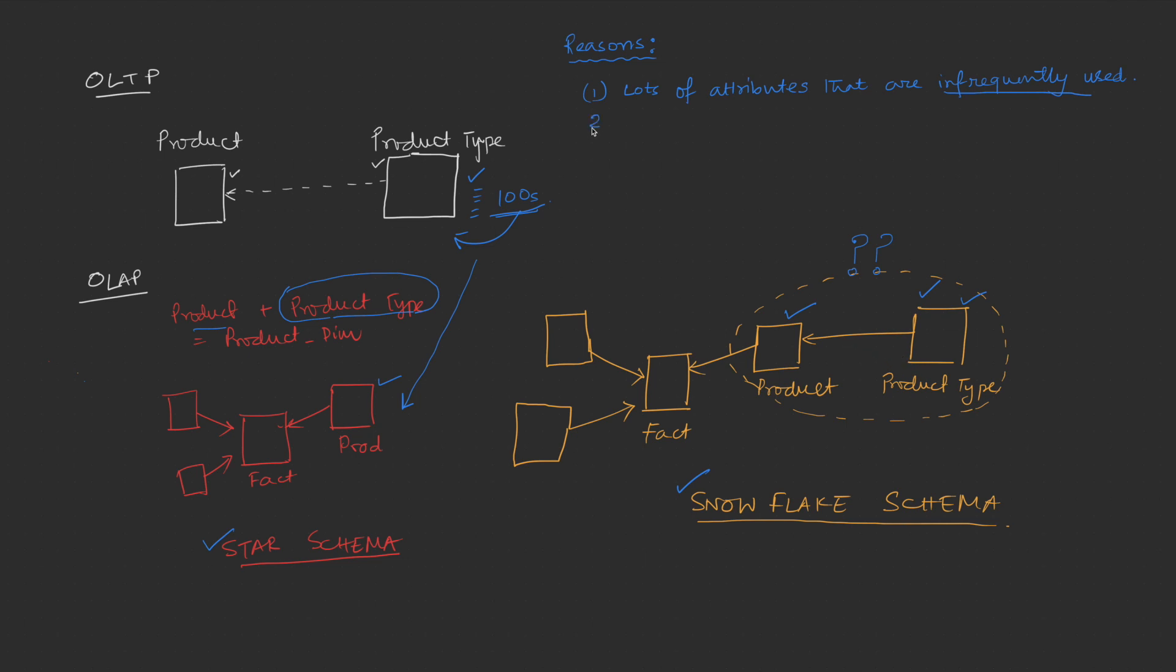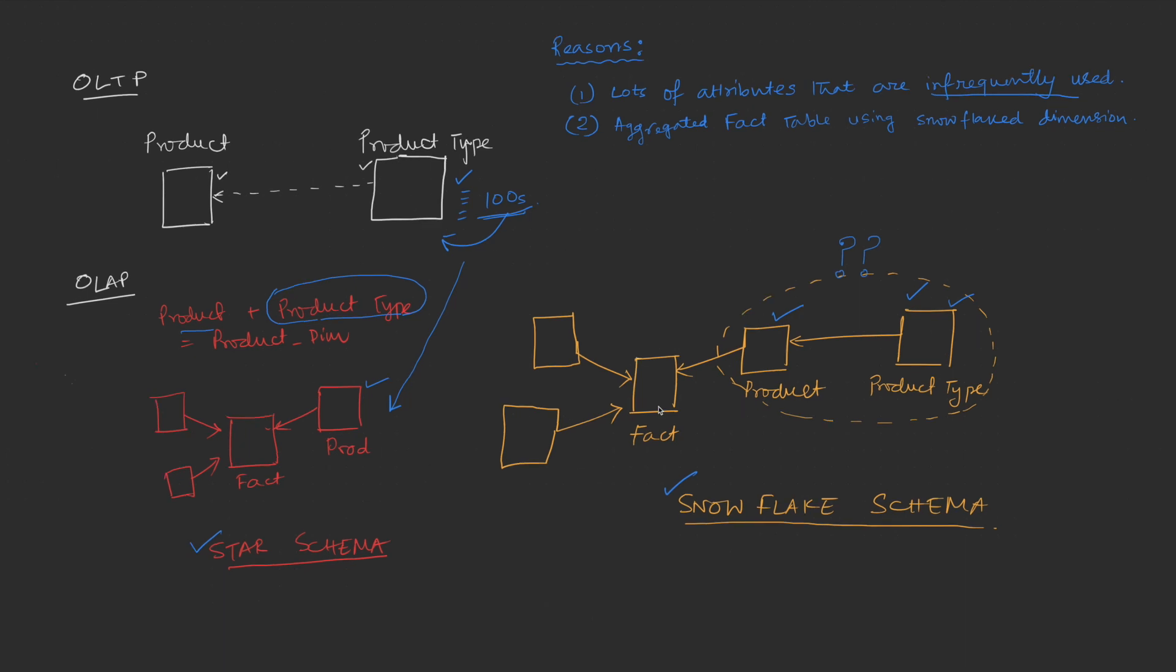The second and even more important reason of using snowflake schema is, if you have a fact table aggregated on the dimension of the snowflake table. To understand what that means, let's look at the below example. Let's mark these tables with some names so that we can visualize the concept more easily.